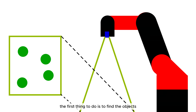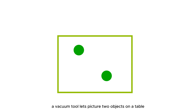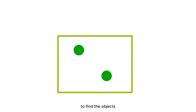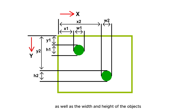The first thing to do is to find the objects. The camera is mounted on the tool of the robot — in this case, a vacuum tool. To find the objects, I use the OpenCV library to detect their locations. This library returns the X and Y coordinates, as well as the width and height of the objects.